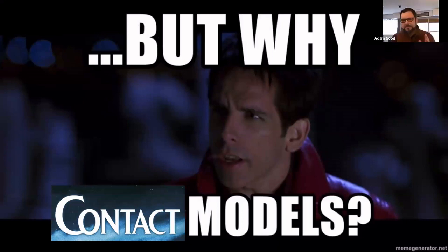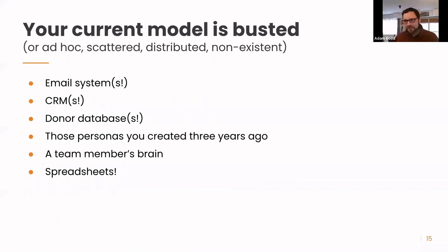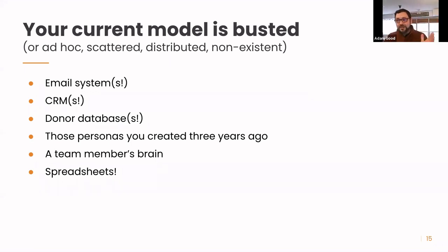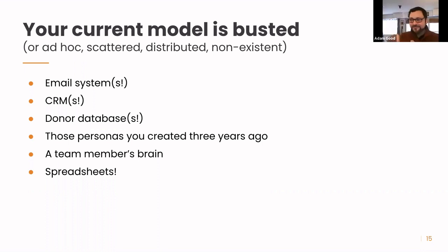Chances are your contact data is ad hoc, scattered, distributed, or non-existent. That's why we really emphasize starting with the contact model rather than a particular system. What we've found with a lot of organizations — particularly in the mission-driven space with many different organizational units like development, programming, communications, and field work — is that you probably have elements of a contact model all over the place. Elements in your email system or systems, and lots of duplicative systems holding little pieces of knowledge about your contacts.